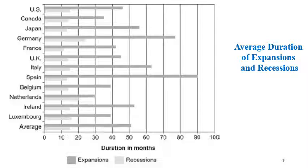Third, business cycles have changed over time. Looking at this graph of average duration of expansions and recessions for different countries, we can see that for the USA the average expansion duration is about 45 months while recession is about 15 months.